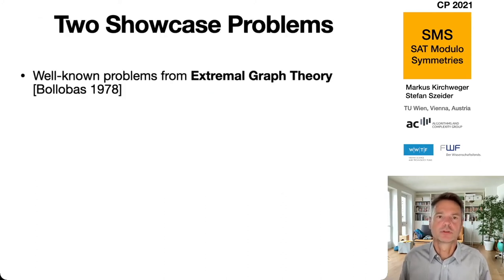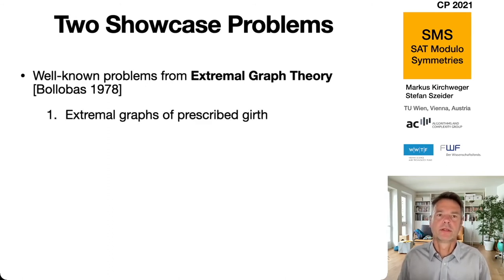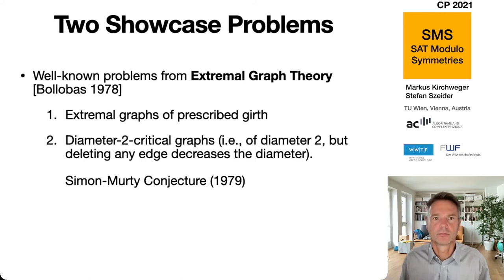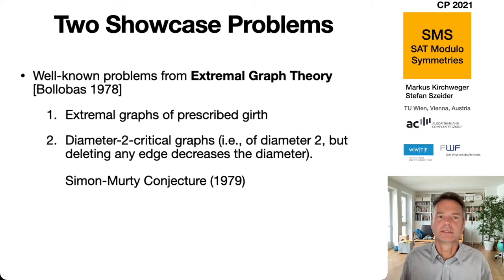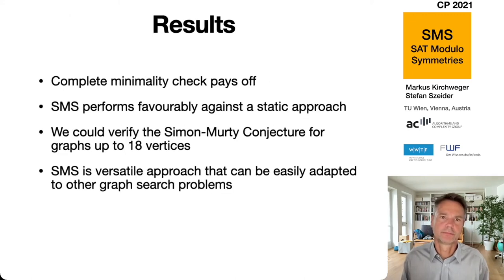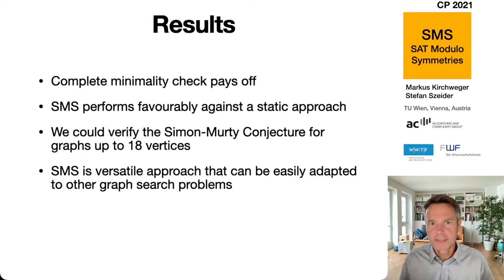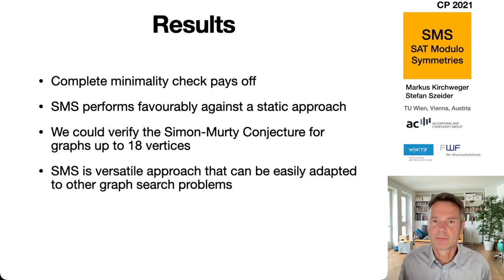We tested this approach on two showcase problems from extremal graph theory: one is about extremal graphs of prescribed girth, the other on diameter-2 critical graphs. Connected to this is the Simonetti-Murty conjecture. We can show that a complete minimality check pays off — for instance, we could verify the Simonetti-Murty conjecture for graphs up to 18 vertices.